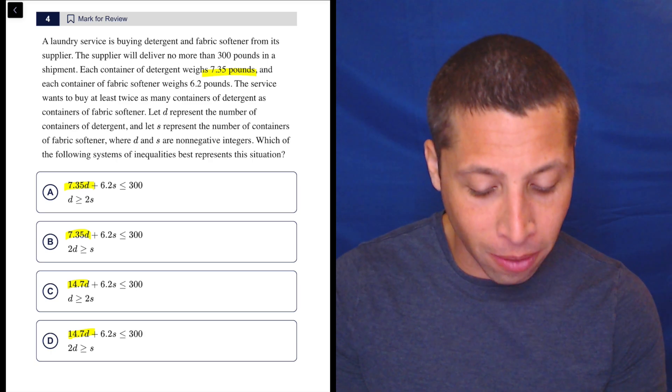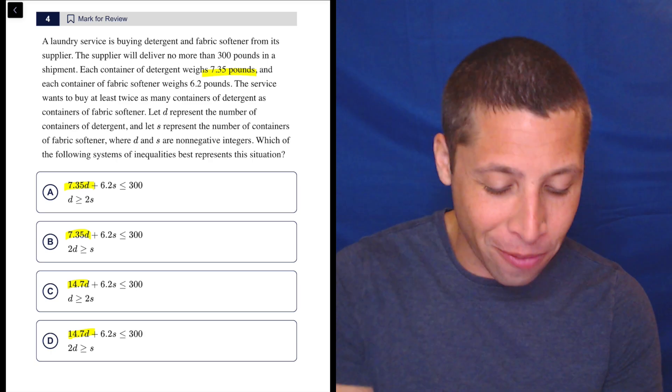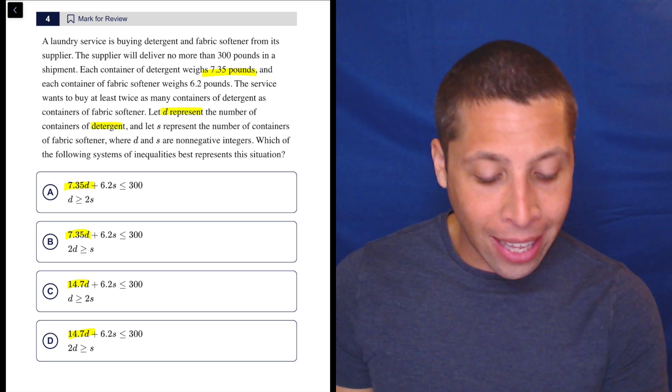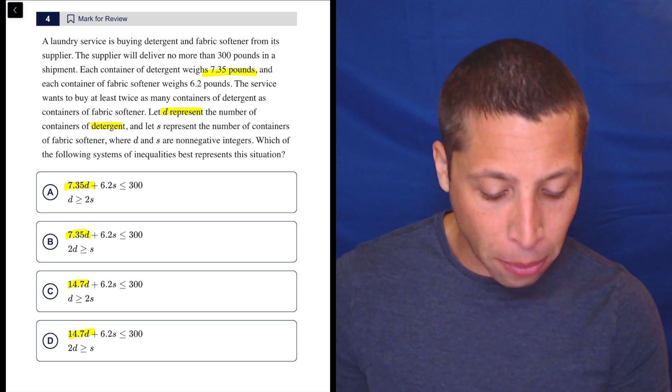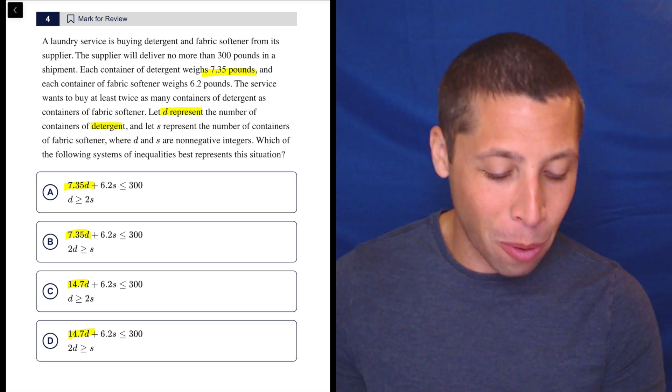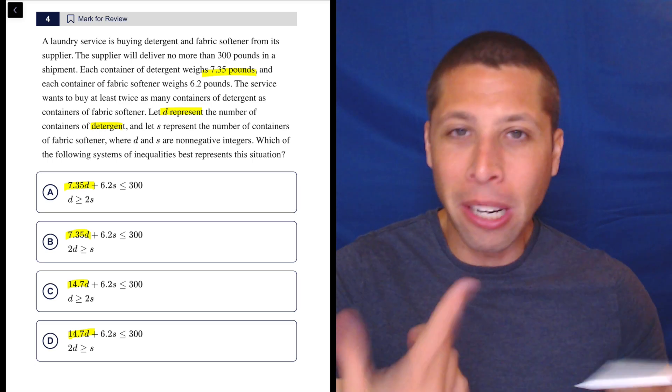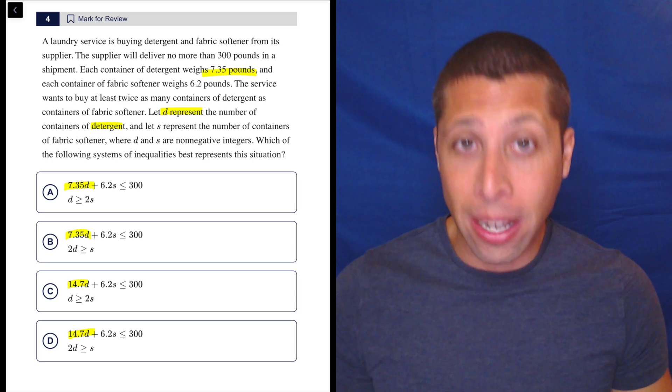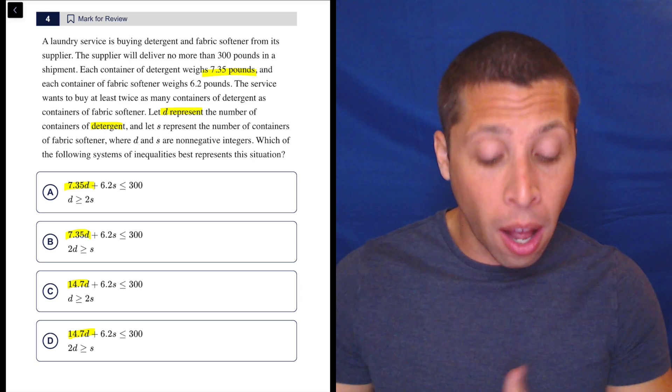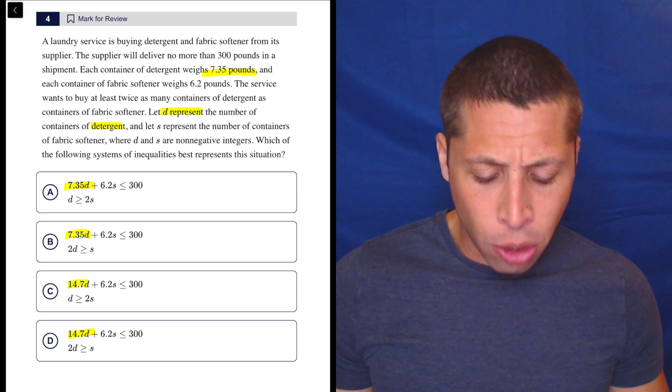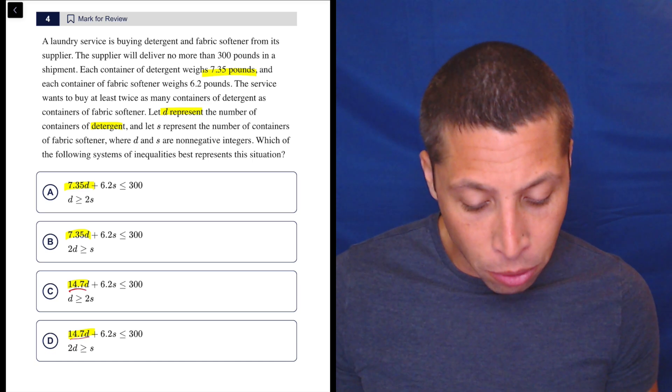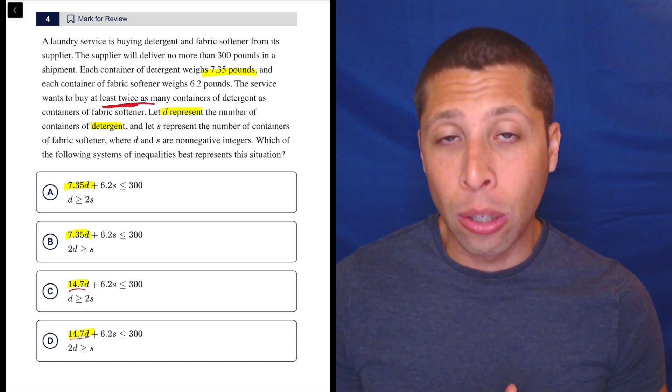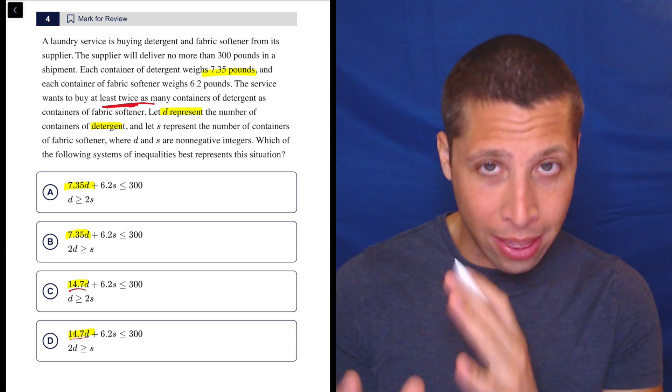And each container of fabric softener weighs 6.2 pounds. The service wants to buy at least twice as many containers of detergent as containers of fabric softener. Let D represent the number of containers of detergent, and let S represent the number of containers of fabric softener, where D and S are non-negative integers. Which of the following systems of inequalities best represents the situation? But the thing is that this 7.35 is a rate. It is the value of a jug of detergent. So I get why they're doubling it here. They're trying to mess with you because it does talk about at least twice as many, but that's not going to affect the value. That will affect the other equation, but it will not affect this one.